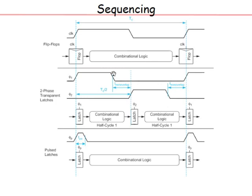Timing analysis is much easier for flop-based design — you just analyze each stage independently and ensure it meets timing. In latch-based design, because latches can be transparent, data can flow through multiple stages. With clock skew, phi-1 and phi-2 could both be on simultaneously, allowing data to race through. You may need to analyze multiple pipeline stages together to verify correctness, making the analysis considerably more complex.